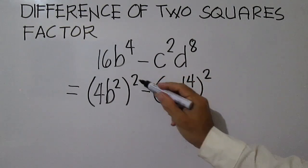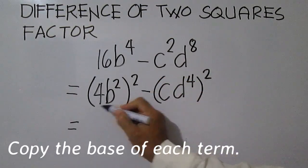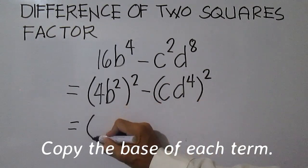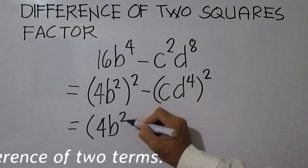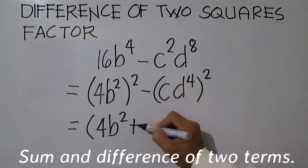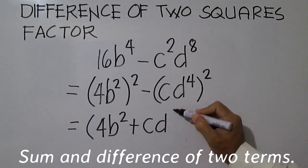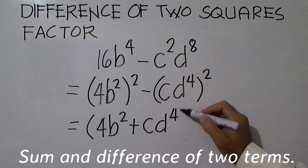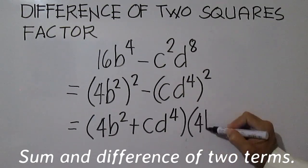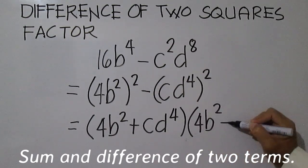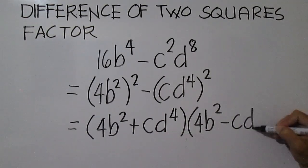We have difference of two squares now. Copy the base of each term and write in the form sum and difference of two terms. The factors are 4b squared plus c, d to the power of 4, and 4b squared minus c, d to the power of 4.